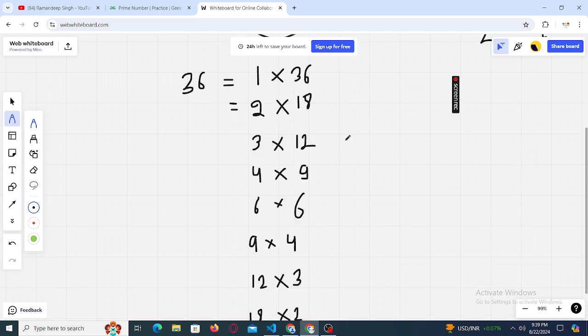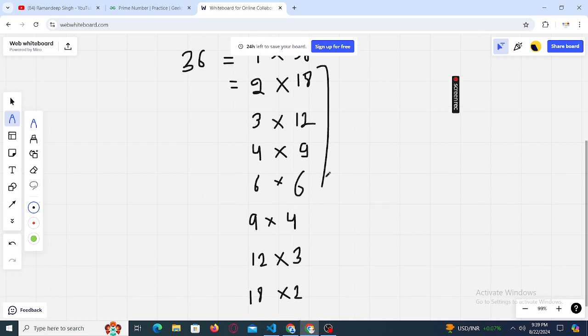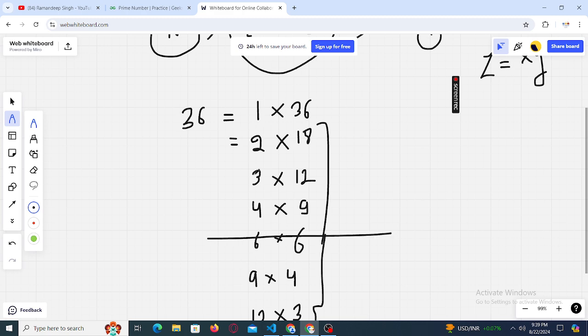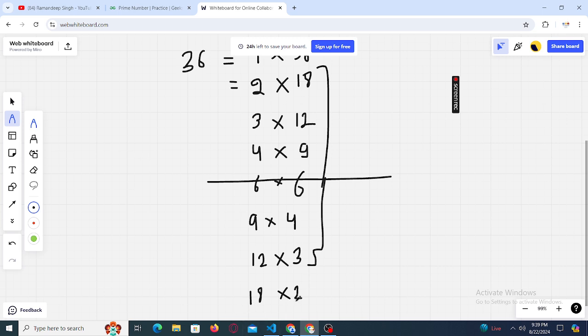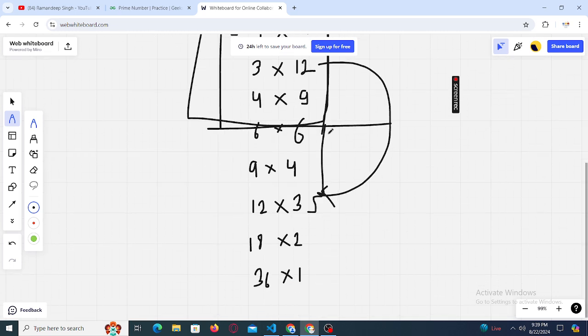So leave these factors 1 and 36. We can see that in this range from 2 to this point 12, we can see that here 2 into 18 is actually repeated here as 18 into 2. 3 into 12 is repeated here as 12 into 3, so 4 into 9 as 9 into 4. So we can see that the second part is the mirror image of the first one. That means even if we check for the first part, it is enough for us. We do not need to consider this second part.